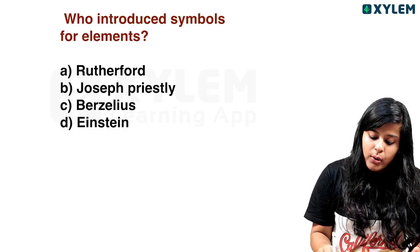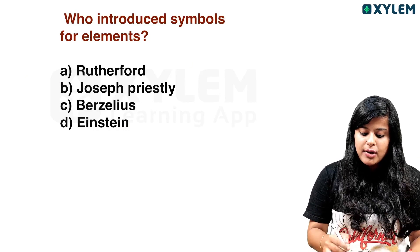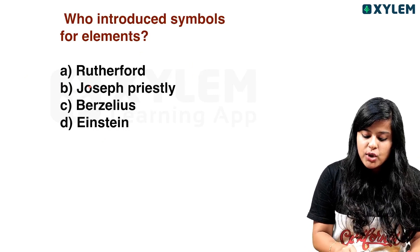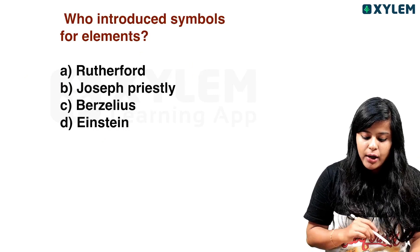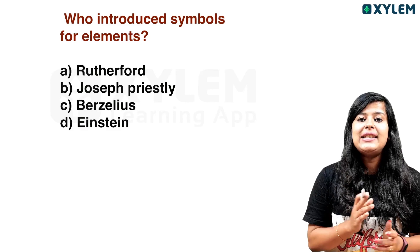Who introduced symbols for elements? Options: Rutherford, Joseph Priestley, Berzelius, or Einstein. The answer is Berzelius.